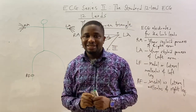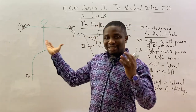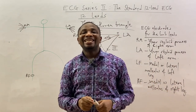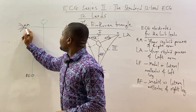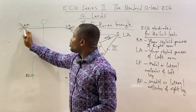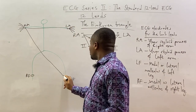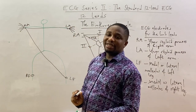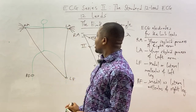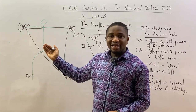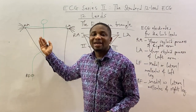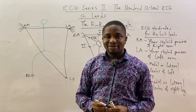If we reconnect the imaginary lines between the electrodes: from the right arm to the left arm gives one lead; from the right arm to the left foot gives another limb lead; and from the left arm to the left foot gives a third limb lead. These three lines form the triangle known as the Einthoven Triangle.